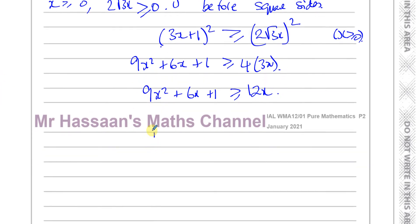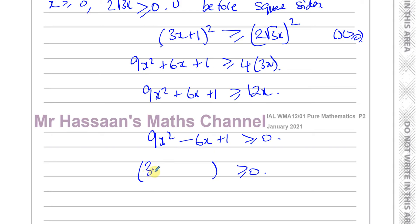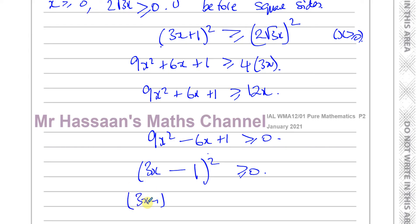Bringing everything to one side: 9x² + 6x − 12x + 1 = 9x² − 6x + 1 ≥ 0. I can see this is a perfect square — it factorizes as (3x − 1)². I spotted this pattern: (3x − 1)² expands to 9x² − 6x + 1, which is exactly what we have. So (3x − 1)² ≥ 0. Anything squared is always greater than or equal to zero, so this is always true.